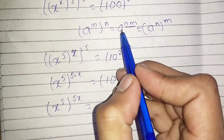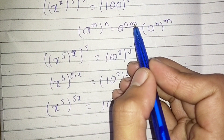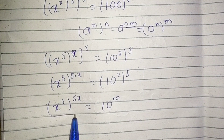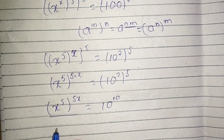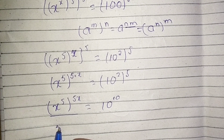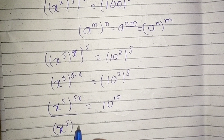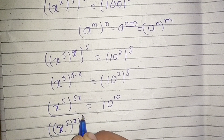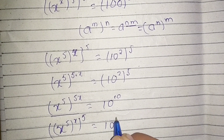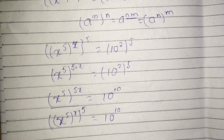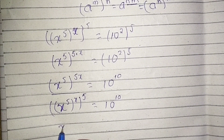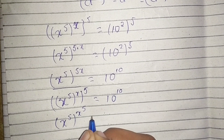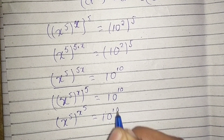Here we use the identity a^(n×m) = (a^n)^m. So we can write the left-hand side as (x^5)^(x^5) = 10^10.